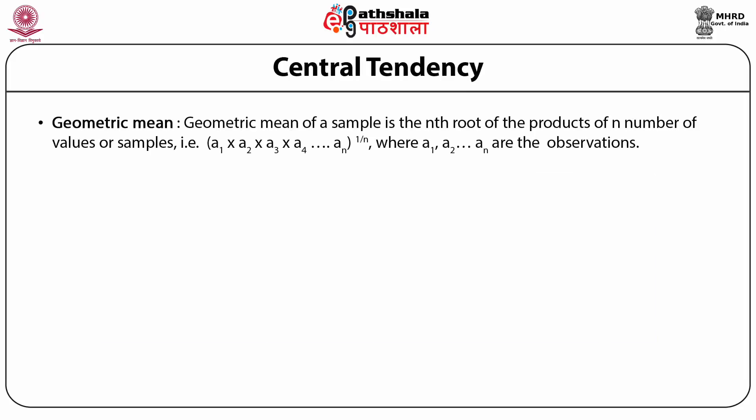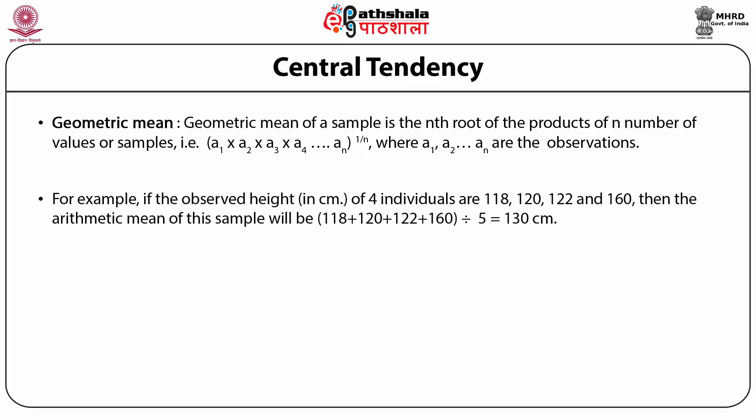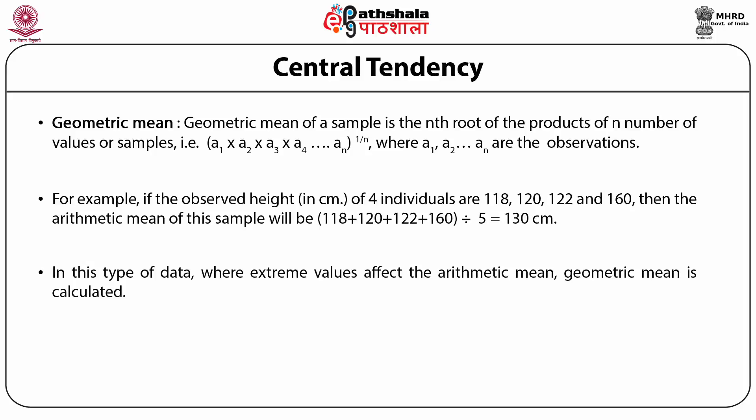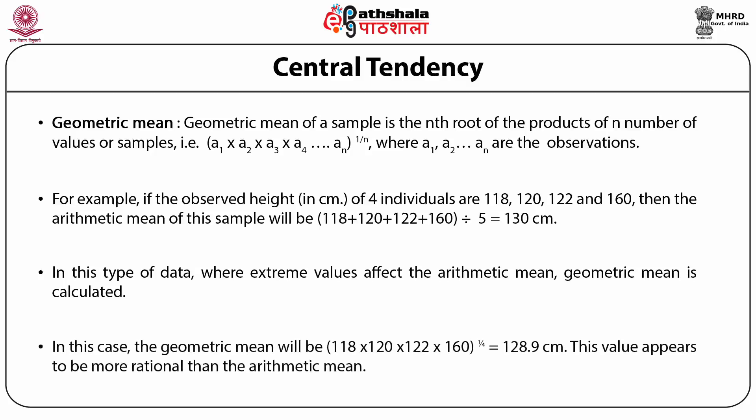The geometric mean of a sample is the nth root of the product of n number of values — that is, a1 × a2 × a3 × ... × an, where a1, a2, and an are the observations. For example, if the observed heights of four individuals are 118, 120, 122, and 160, the arithmetic mean is 130 cm, which is larger than the first three observations because of the extreme value of 160 cm. In this type of data where extreme values affect the arithmetic mean, the geometric mean is calculated. The geometric mean here comes out to be 128.9 cm, which appears to be more rational than the arithmetic mean.